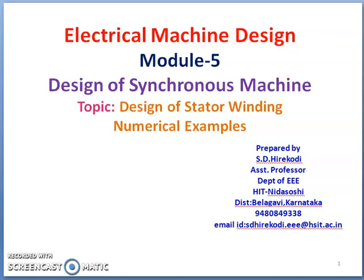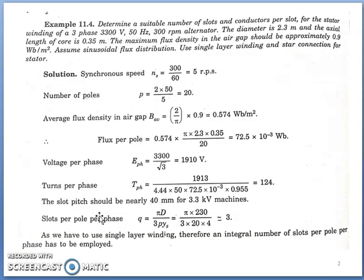In previous lectures we discussed design of stator slots and the factors to be considered for the choice of stator slots. Then we discussed design of stator winding — the procedure to calculate number of stator turns per phase and how the area of cross section of conductors are decided. Based on this background theory, let us discuss some numerical examples on design of stator.